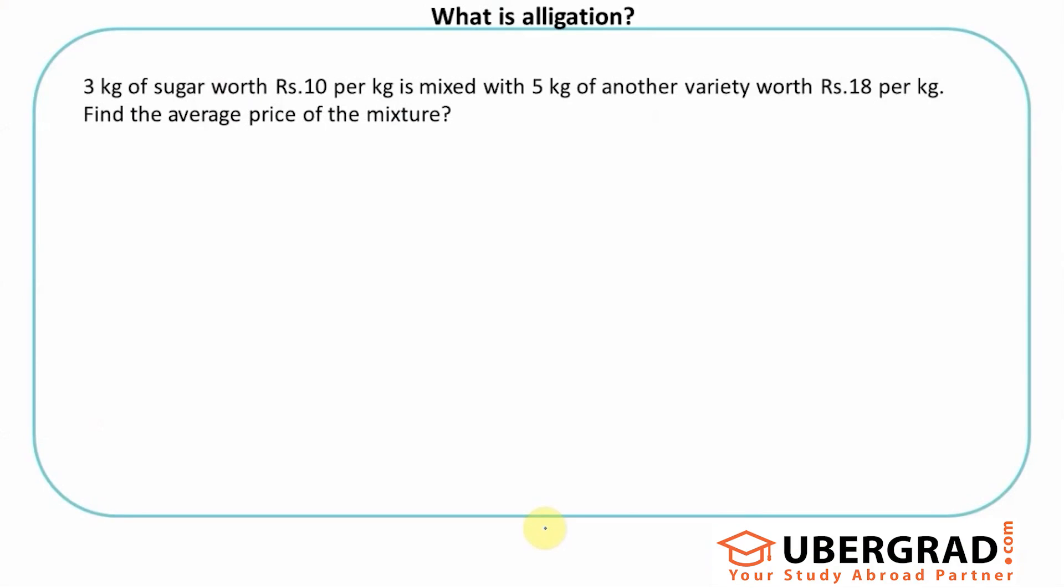First, let's try to understand what is alligation. Alligation is defined as joining things or groups to make a new group, or joining a couple of things to make a new thing. Let's discuss the questions that will be covered under this topic to give you an understanding of what we're going to talk about in this video.